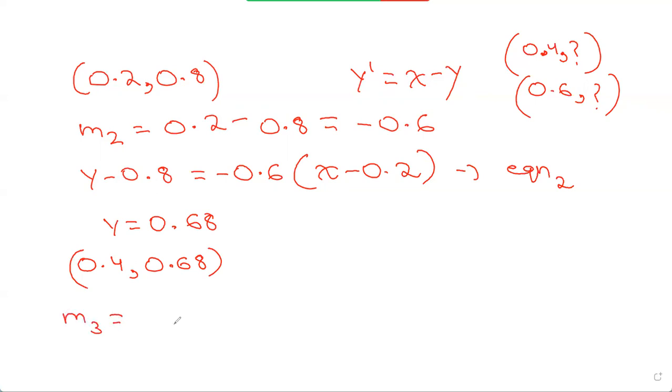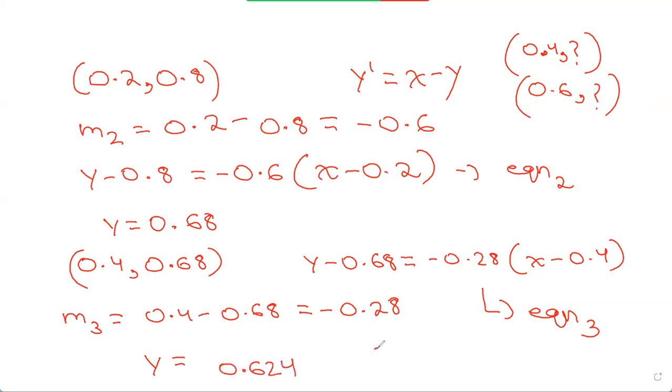So our third point is 0.4 comma 0.68. Using this point, we find m3, 0.4 minus 0.68, which is negative 0.28. Form the equation y minus 0.68 equals negative 0.28 into x minus 0.4. And then finally, plug in our value of x equals 0.6. So this is equation 3. We plug in x equals 0.6 into this, and we get y as 0.624. So our final point is 0.6 comma 0.624.